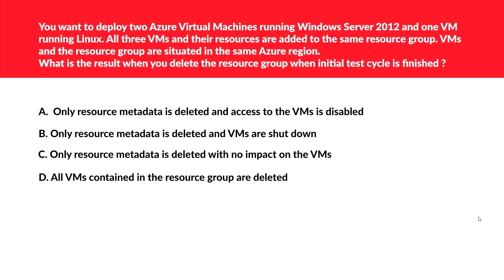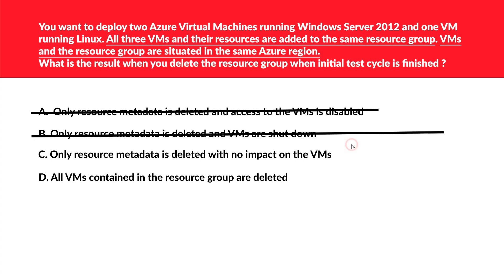The next question: you deploy two Azure virtual machines running Windows Server 2012 and one VM running Linux. All three VMs and their resources are added to the same resource group, situated in the same Azure region. What is the result when you delete the resource group after the initial test cycle? Only resource metadata is deleted and access to VMs is disabled — no, wrong. Only resource metadata is deleted and VMs are shut down — no, wrong. Only resource metadata is deleted with no impact on VMs — no, wrong. All VMs contained in the resource group are deleted — yes, this is the correct option.